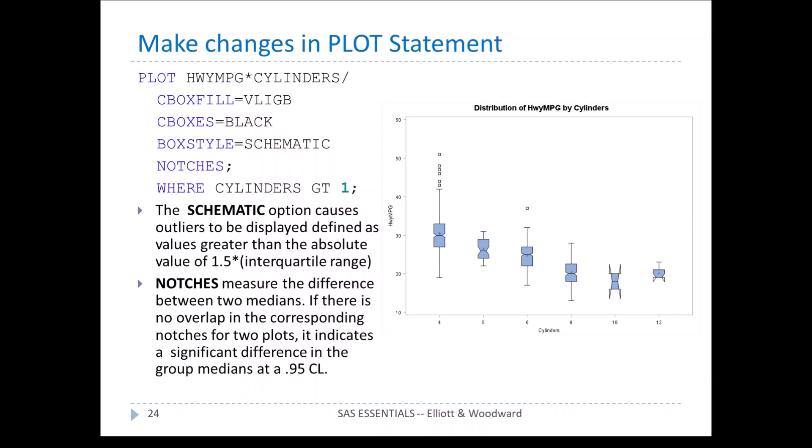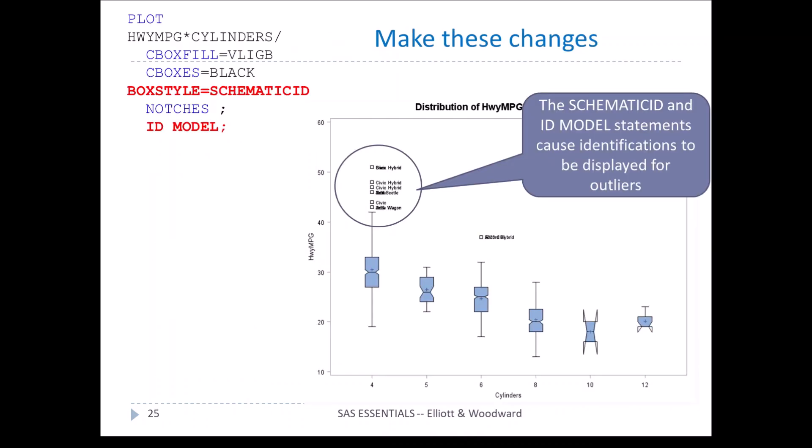Let's make a few changes: change the fill to light blue, make the box plots black, use schematic box plots, and add the notches, again for cylinders greater than 1. The schematic option causes outliers to be displayed as values greater than the absolute value of 1.5 times the interquartile range. We can see box plots with little dots indicating outliers — for 4 cylinders, there are a few cars that get better gas mileage than normally expected. With box style equals schematic ID, we can see the actual IDs — they tend to be the hybrid versions.